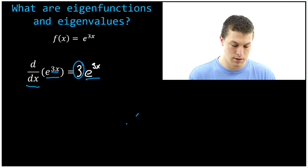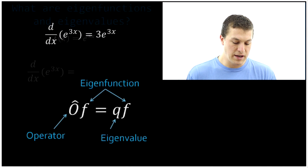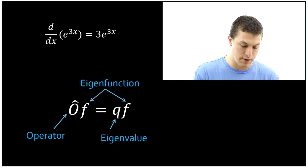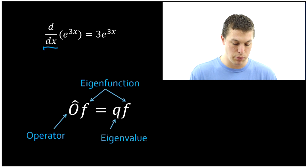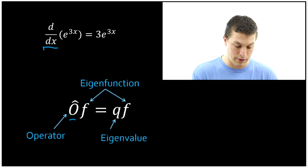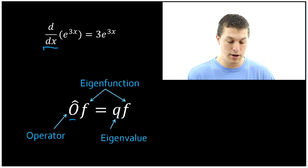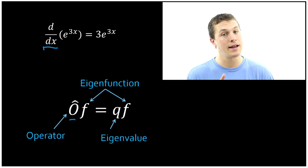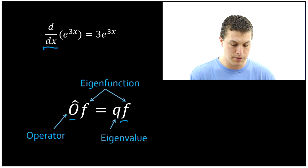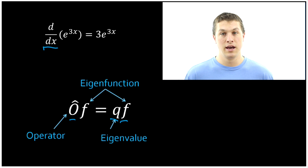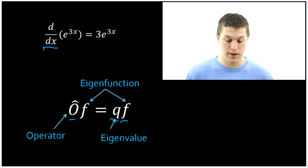Basically what this is saying is: take any operator — in our case, our operator was a first derivative, expressed symbolically with an O and a little hat. An operator is just something that acts on a function. If you take an operator, apply it to a function, and it spits back out that same exact function times some constant, then that function is called an eigenfunction. That constant is called the eigenvalue.